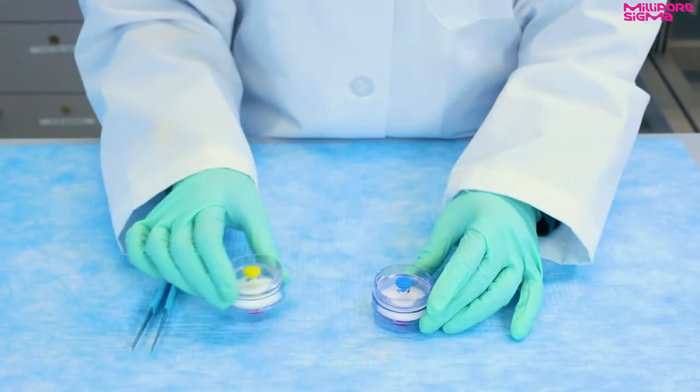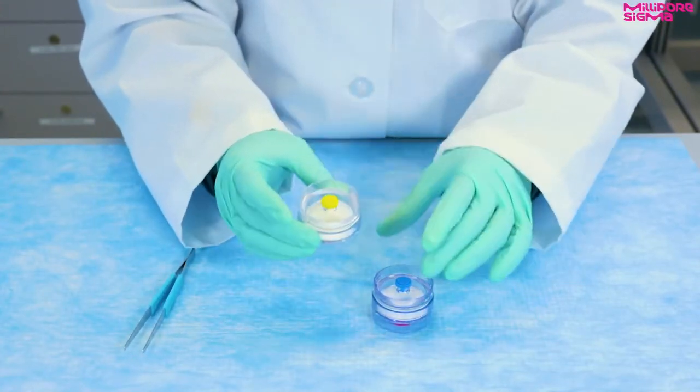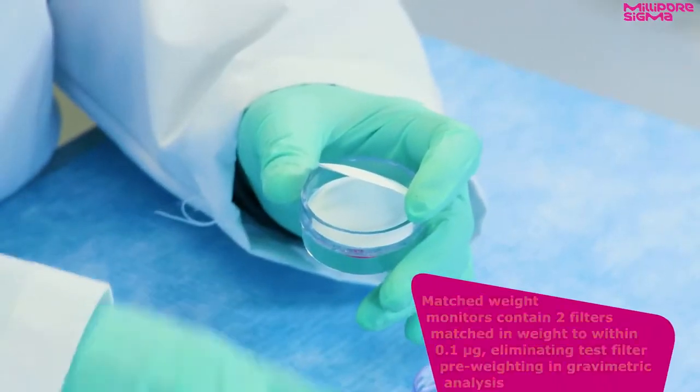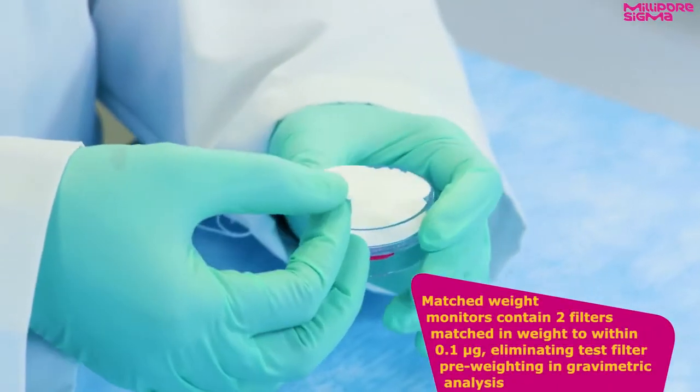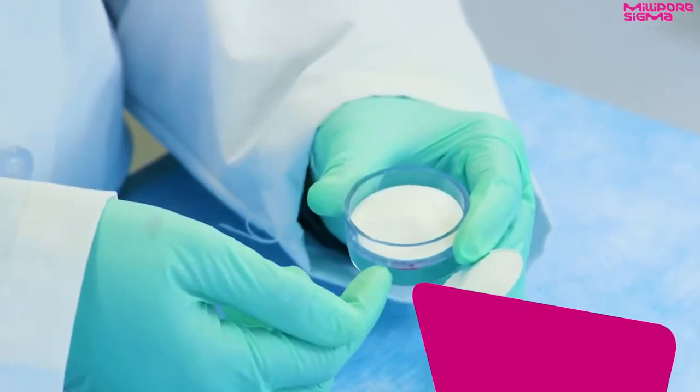0.8 micrometer monitors are also available in matched weight versions with yellow plugs instead of blue plugs. Matched weight monitors contain two filters matched in weight within 0.1 micrograms, eliminating test filter pre-weighting and gravimetric analysis.